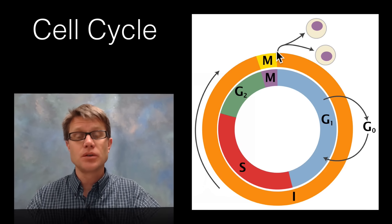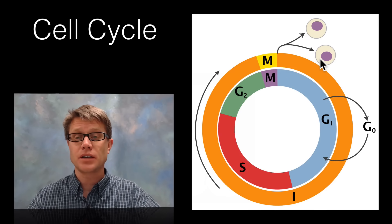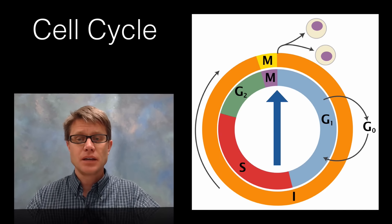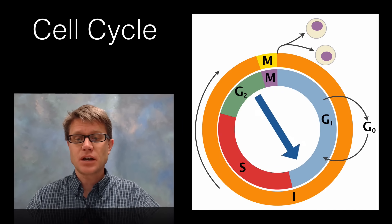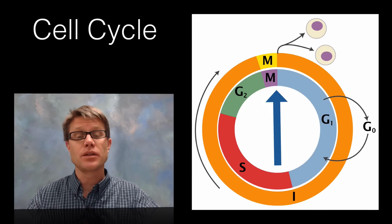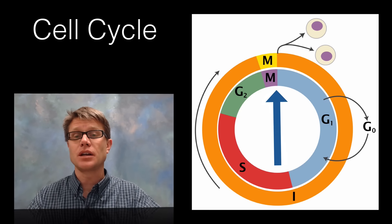What do you get if you go through the whole cell cycle? You get two cells, and each of those independently go into their own cell cycle. You can think of it almost like a clock. Cells spend various amounts of time in each phase, but they spend most of their time in interphase — growing, copying the DNA, and then growing again.